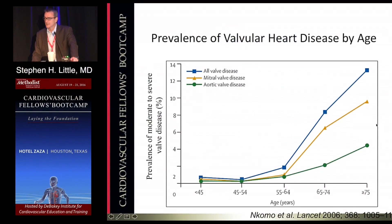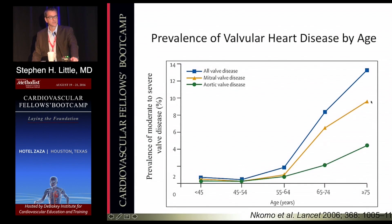So the prevalence of valve heart disease — this is a paper that gets cited all the time by Nakomo et al, 2006, so 10 years old, still the most current we have. Every decade, the incidence of all valve diseases goes up. Mitral is the most prominent, followed by aortic, and by the time you're age 75, about 10% of the population have significant mitral valve dysfunction. So it's a big deal, and it's actually getting bigger as our population ages.